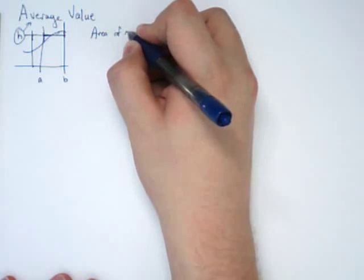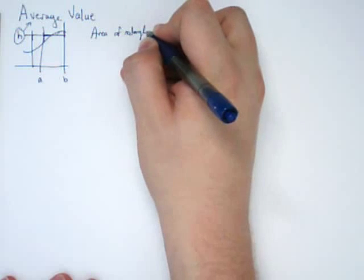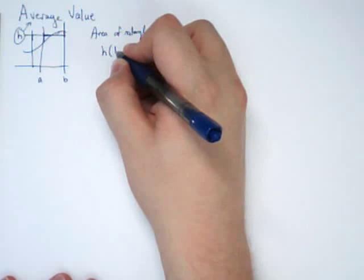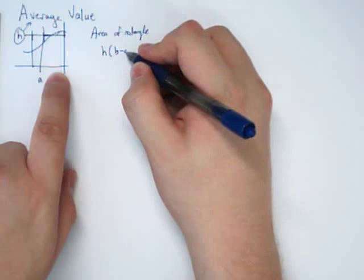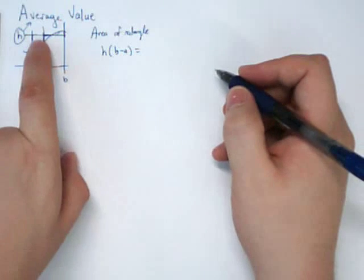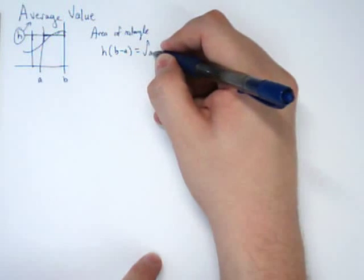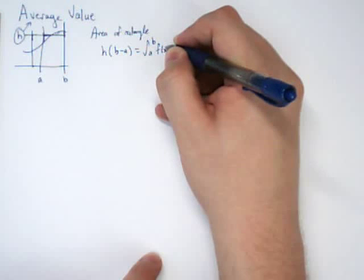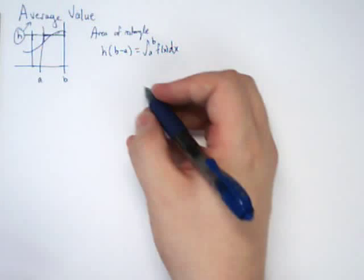So the area of rectangle, which is H the height times the width of the bottom, which is B minus A, needs to match precisely the area under the function, which is A to B, F of X, DX.